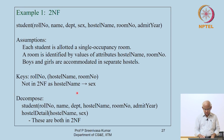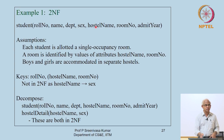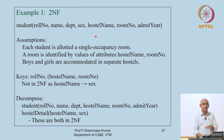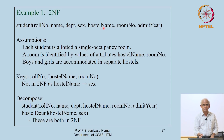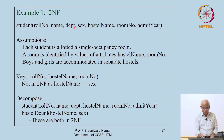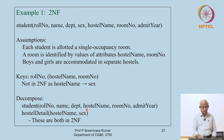The redundancy that second normal form detects here is that sex — a general hostel-level property — was being stored with every student record. In general the redundant data could be much more. The theory tells us there is redundancy because you are keeping hostel-level information with every student, even though it can be derived from the hostel name alone.